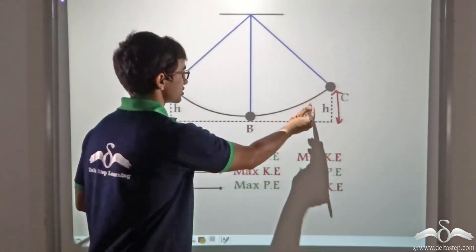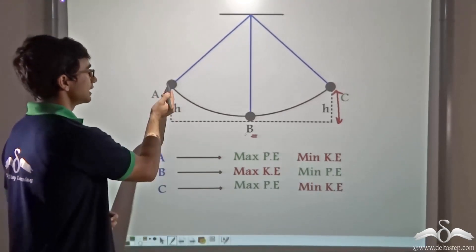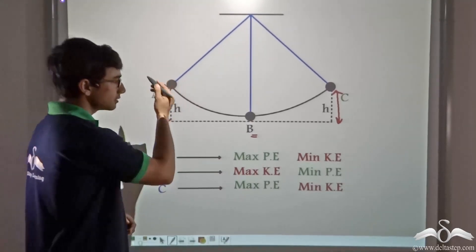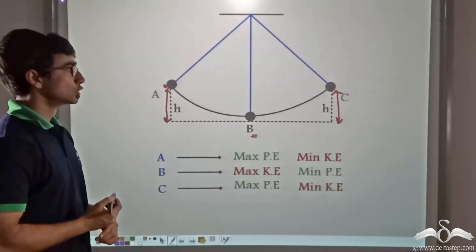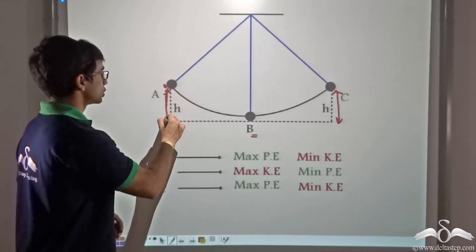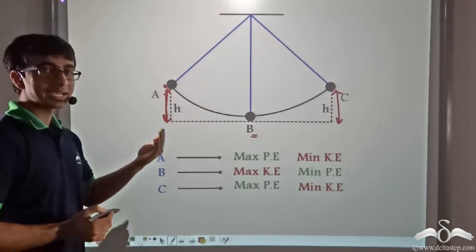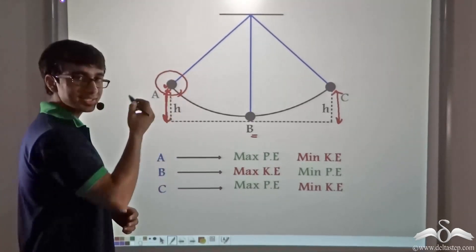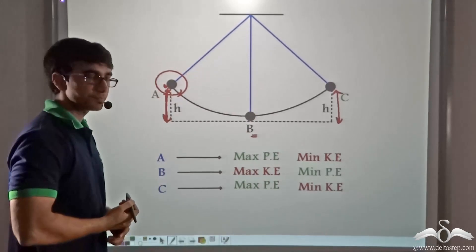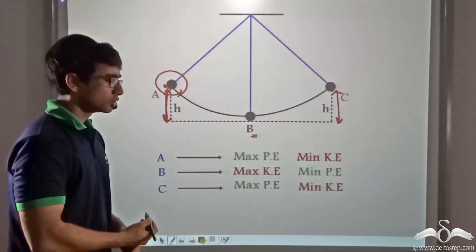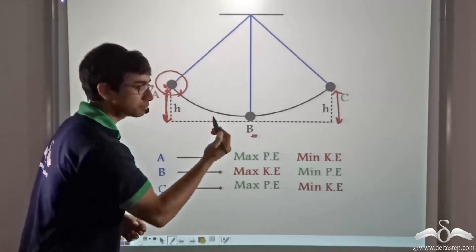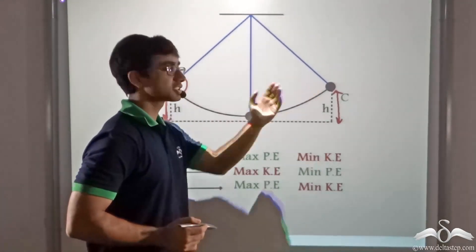On releasing, it crosses its mean position at B and swings to reach A. At A also, it reaches a height h from the ground and then again reverses and repeats its motion. So now if we analyse, we will find that at point A it has maximum potential energy due to its height from the ground and minimum kinetic energy because the bob momentarily comes to rest at this position. Now it starts swinging back and crosses its mean position at B. Now at B, the bob is just above the ground, so it has minimum potential energy, and since it is in full swing, it has maximum kinetic energy.